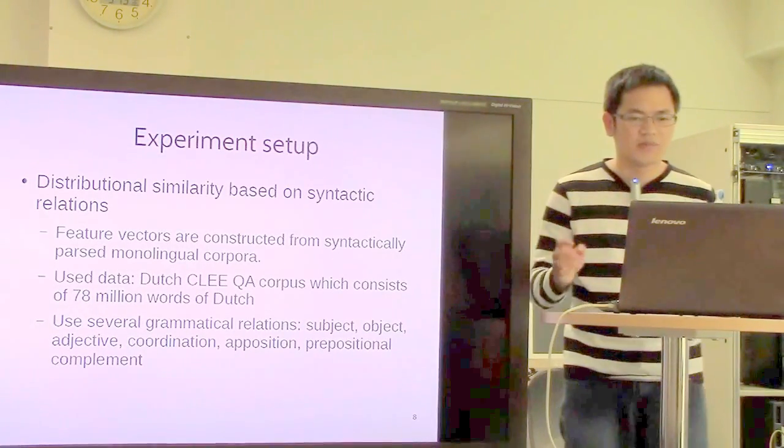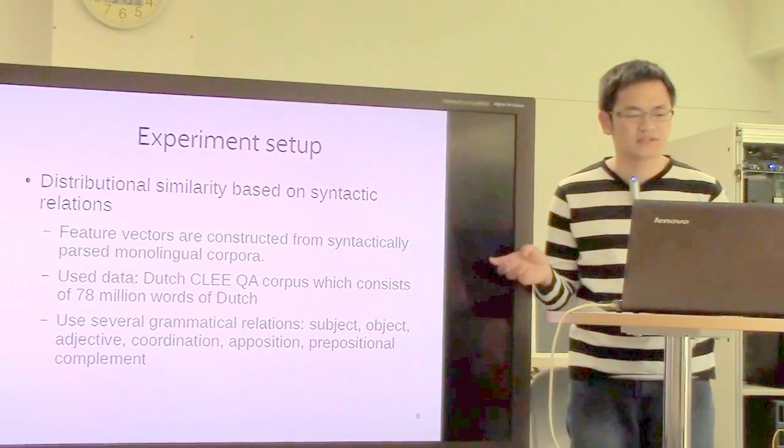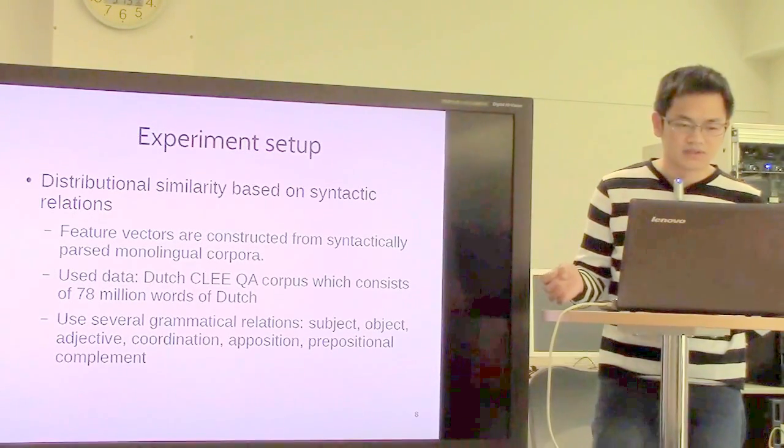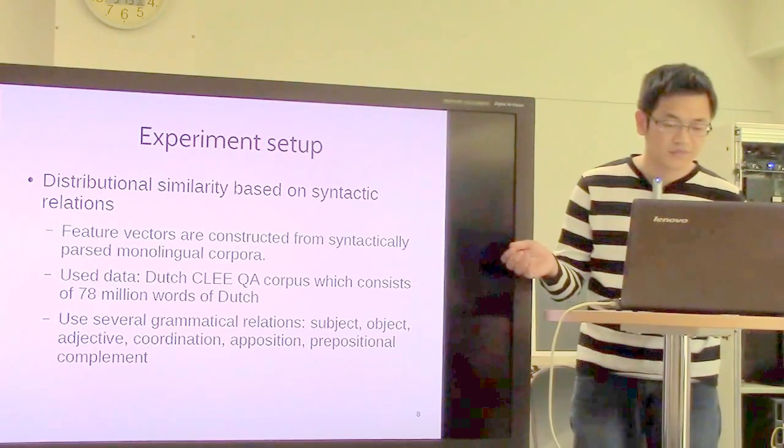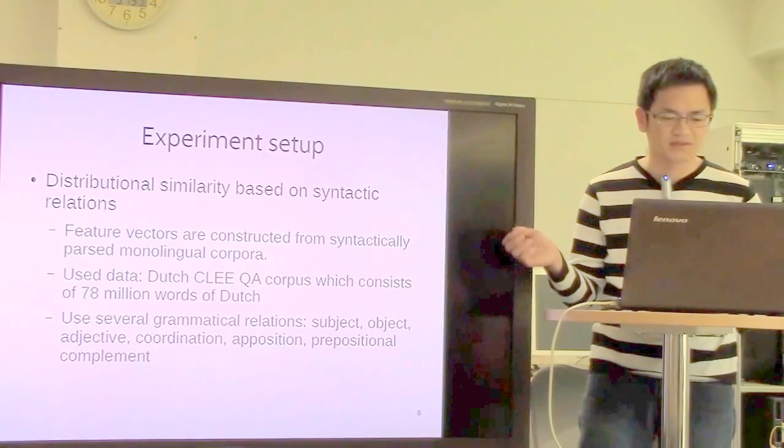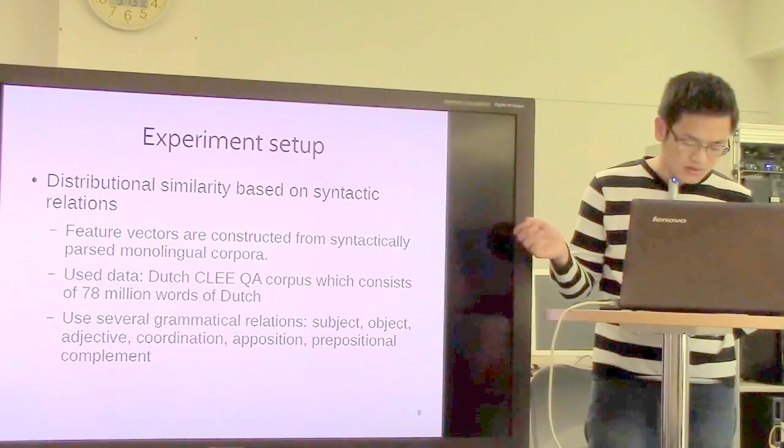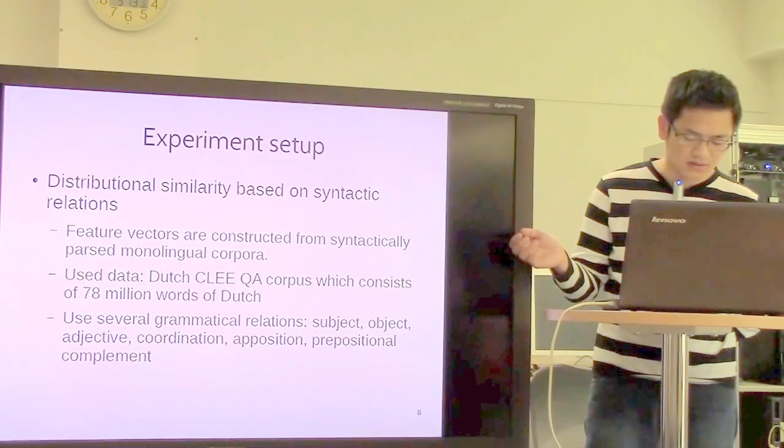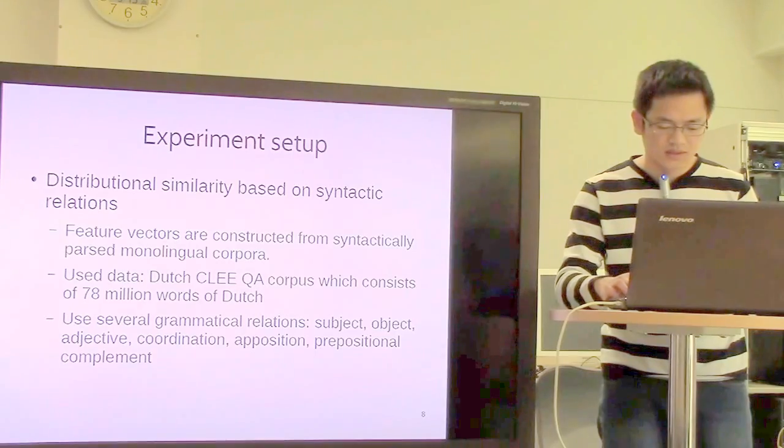For the experiment setup, I have talked about two methods. The distributional similarity based on syntactic relations and the distributional similarity based on word alignment. First, for distributional similarity based on syntactic relations, the feature vectors are constructed from syntactically parsed monolingual corpus. They use the Dutch CLEF QA corpus, which consists of 78 million words of Dutch.